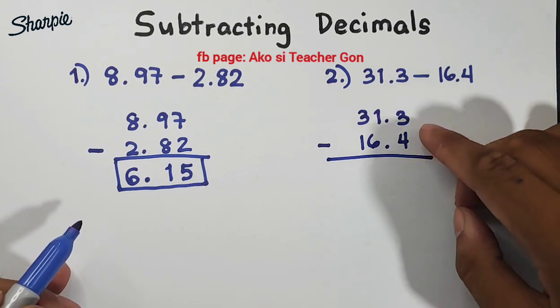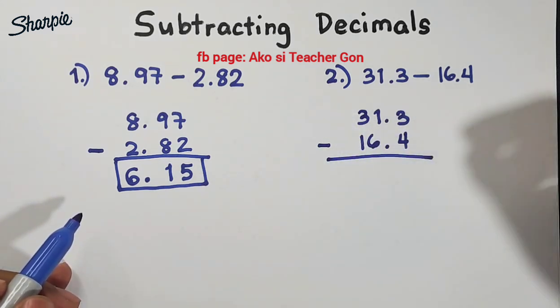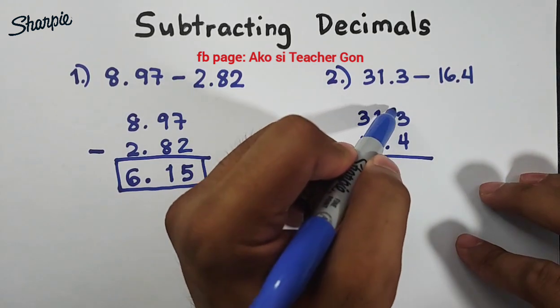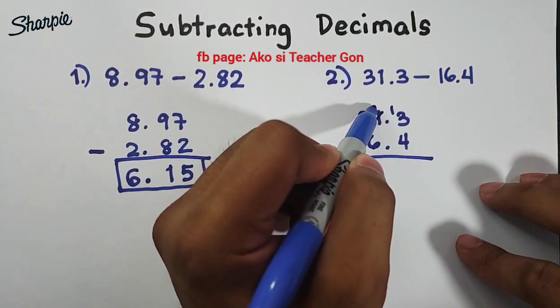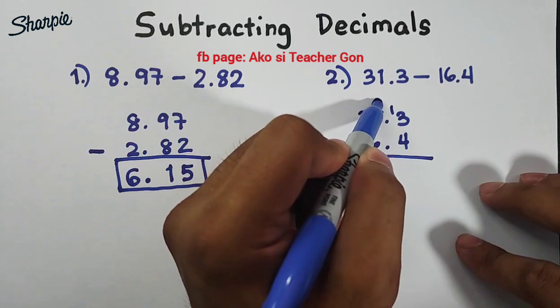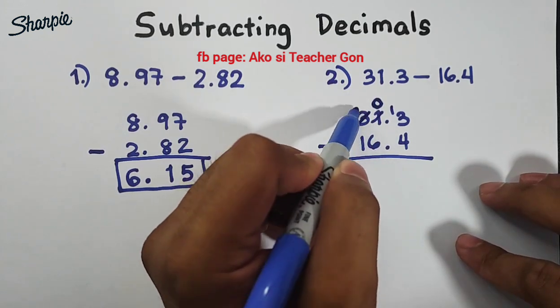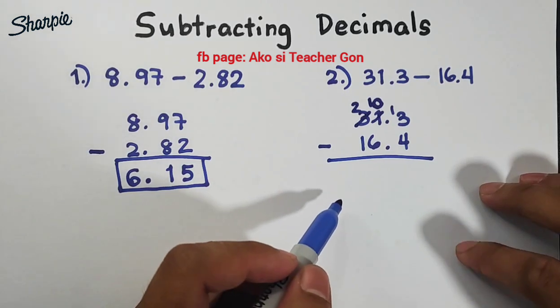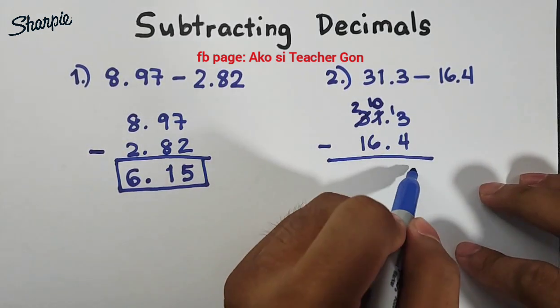Now as you can see we have here 3 minus 4 so this one is not possible, we will borrow one from here. So it will become 13 and this will become 0, and we will also borrow one here, we have here 2 and this will become 10. So let's start with this, 13 minus 4 is equal to 9.